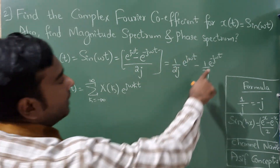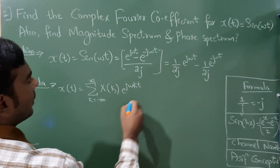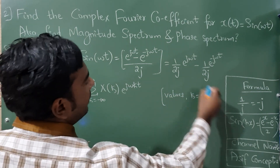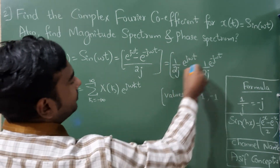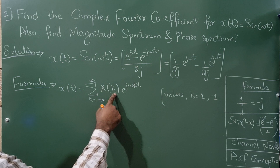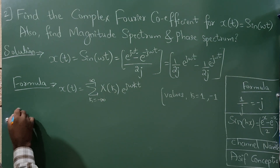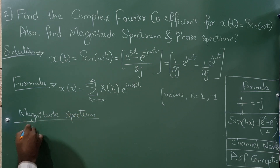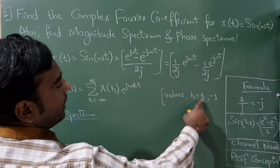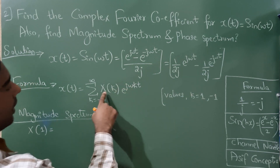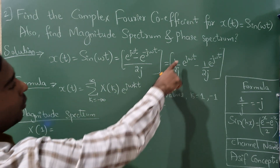In place of k, you can see here it is 1 and here it is minus 1, so the k values will be 1 and minus 1. Now to solve the magnitude spectrum we need X(k). So X(1) — the k value here is 1, and in place of X(k) or X(1), what do you see here?